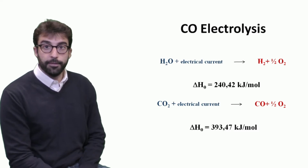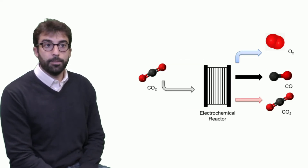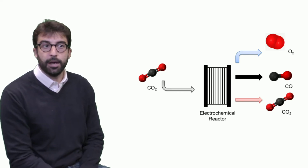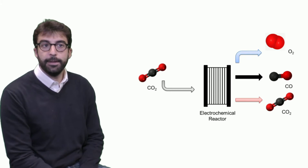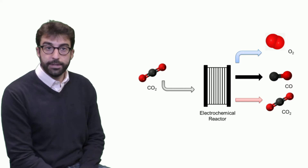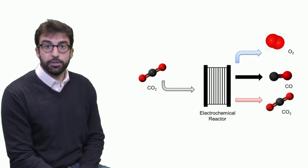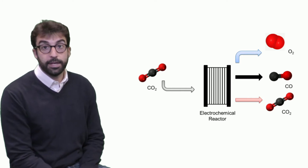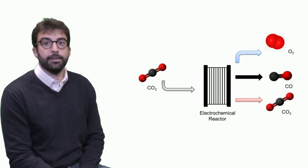At the component level, the process is more or less the same. We have an electrochemical reactor that is fed with carbon dioxide, and as an output of the electrolyzer, we have oxygen on one side, and on the fuel side, a combination of carbon monoxide and some unreacted carbon dioxide.